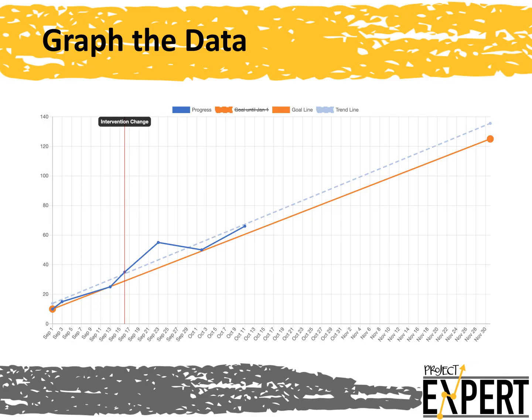Once we have our progress monitoring data, we need to graph it. We can then use the graph to help us determine whether to make an instructional adjustment. If the graph indicates that the student is still not progressing, we move to the next step in the DBI process.